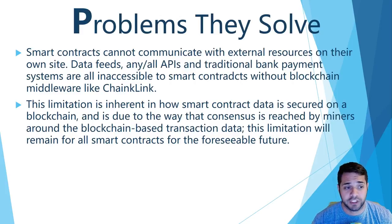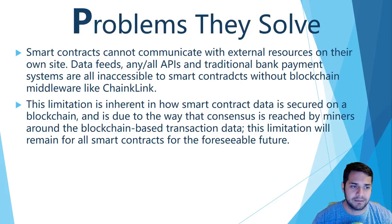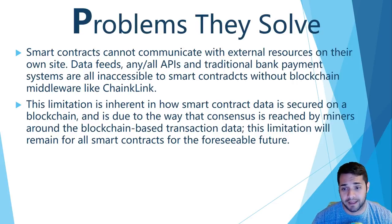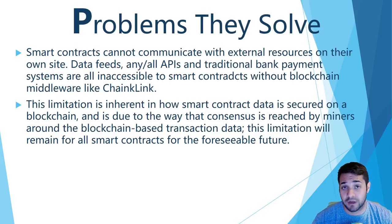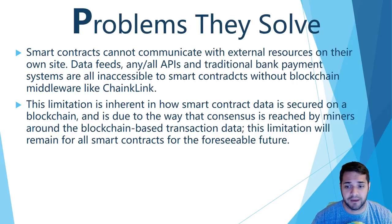So what problems is Chainlink trying to solve? Before Chainlink, smart contracts could not communicate with external resources on their own — website data feeds, APIs, and bank system payments are unreachable to smart contracts without a middleman like Link. This limitation is inherent in how smart contract data is secured on a blockchain and is due to the way that consensus is reached by miners around blockchain-based transaction data. This limitation will remain for all smart contracts for the foreseeable future.